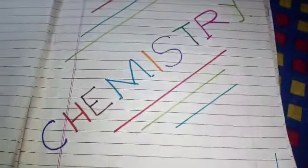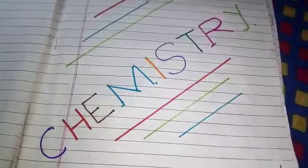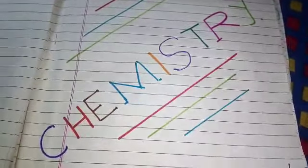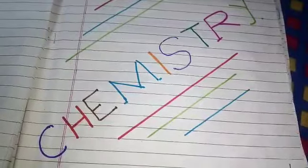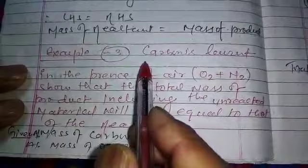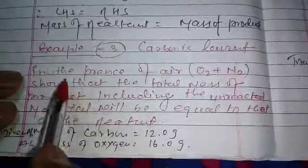Once again, welcome to chemistry class. Now we should talk about the law of conservation of mass and the third example of that conservation of mass: carbon. The third example is carbon is burnt in the presence of air.